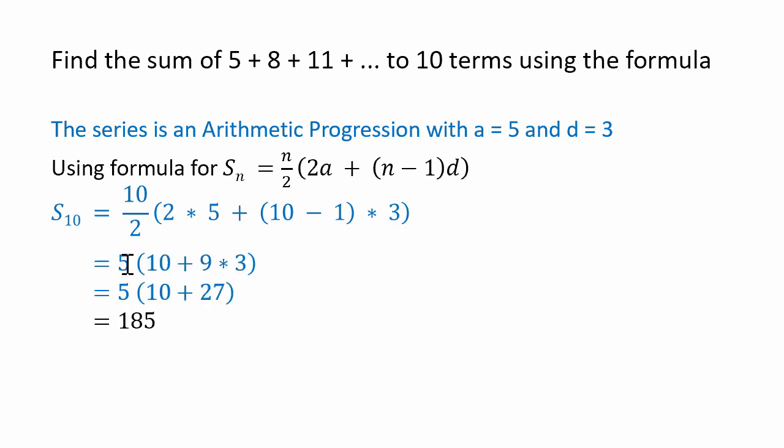Let us solve this. 10 by 2 is 5, 2 times 5 is 10, 10 minus 1 is 9, 9 times 3 is 27, then 10 plus 27 equals 37, and 37 times 5 is 185.